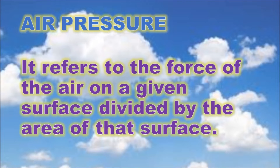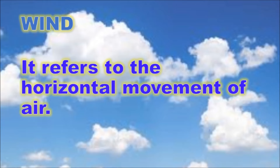Air pressure is the force of the air at a given surface divided by the area of that surface. It plays a vital role in all weather systems. Large regions in the atmosphere that have higher pressure than the surroundings are called high pressure areas. Regions with lower pressure than the surroundings are called low pressure areas. Most storms occur in low pressure areas, which is why we normally hear this during news reports. Low pressure areas usually occur in warm oceans during summer seasons.